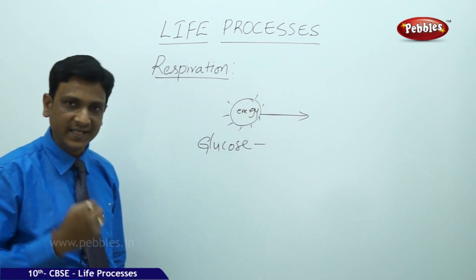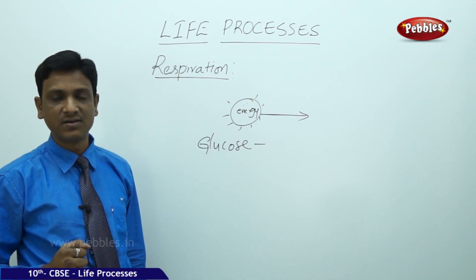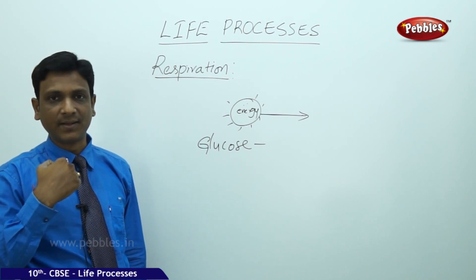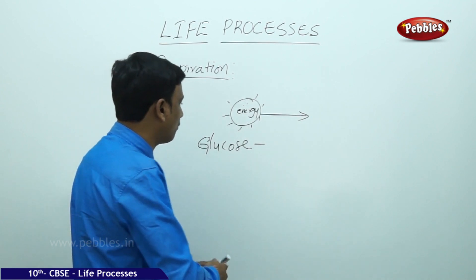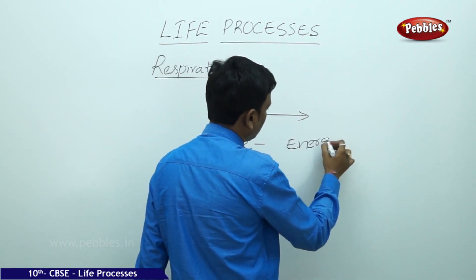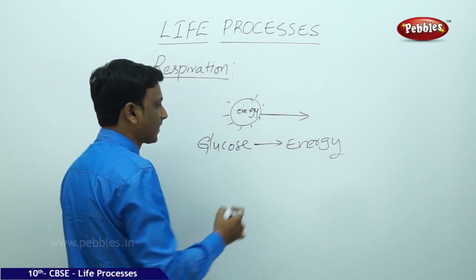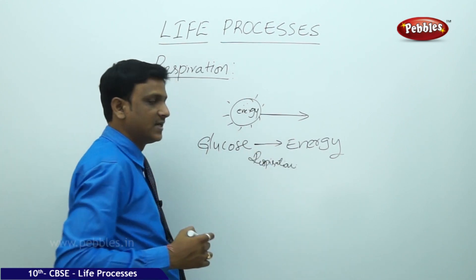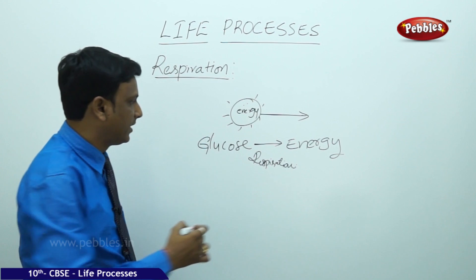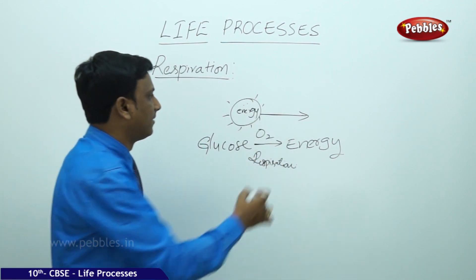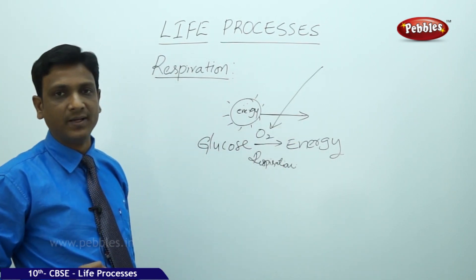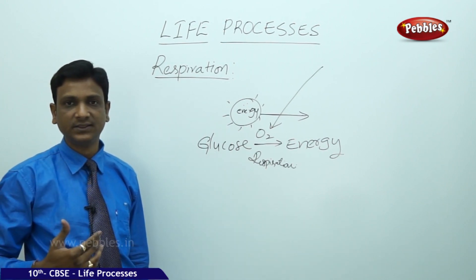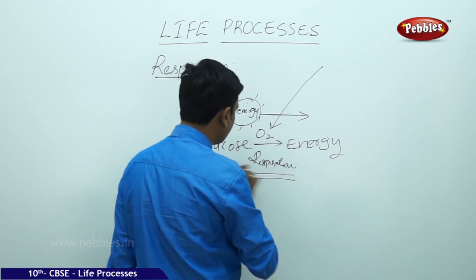For the release of energy from molecules, oxygen is required. We take in air which contains oxygen; that oxygen is supplied to the cells for the breakdown of glucose to energy. This process is also respiration, but it happens inside the cell — it is cellular respiration. Oxygen is required, and this oxygen comes from the surroundings by the process of breathing.